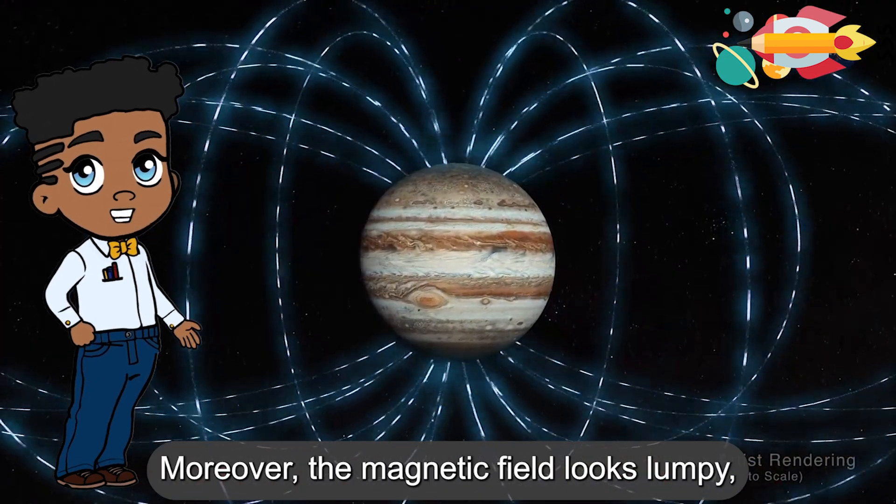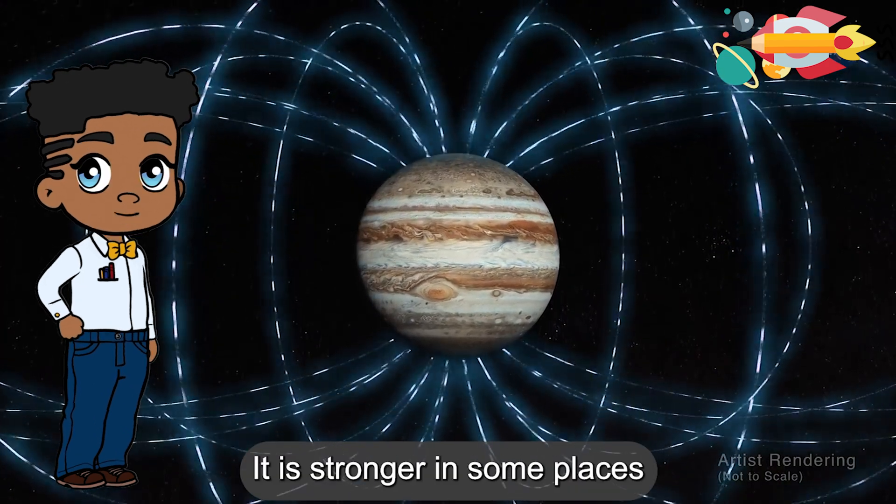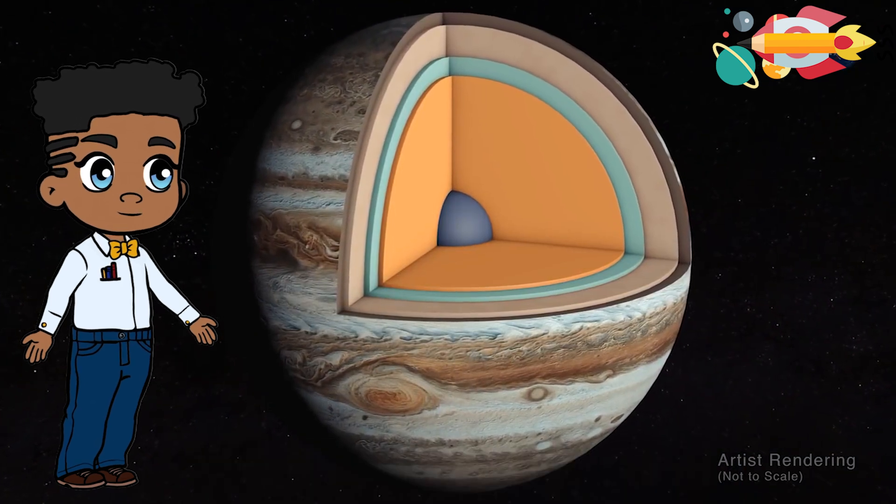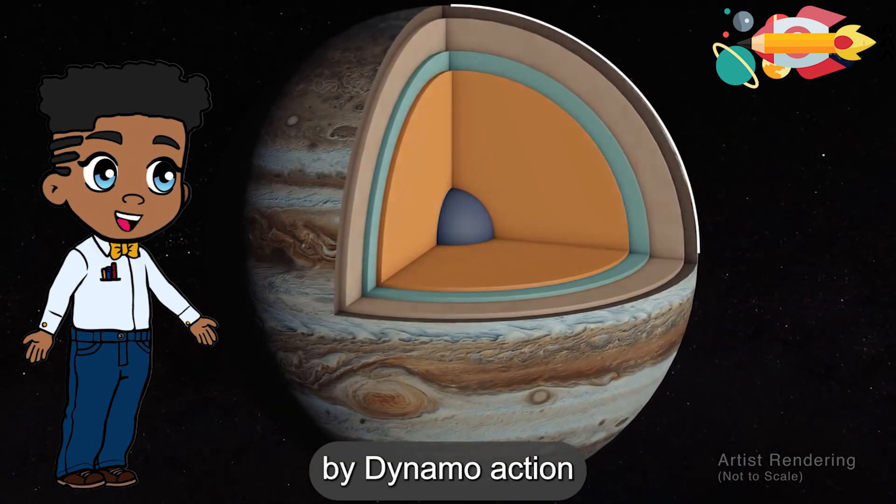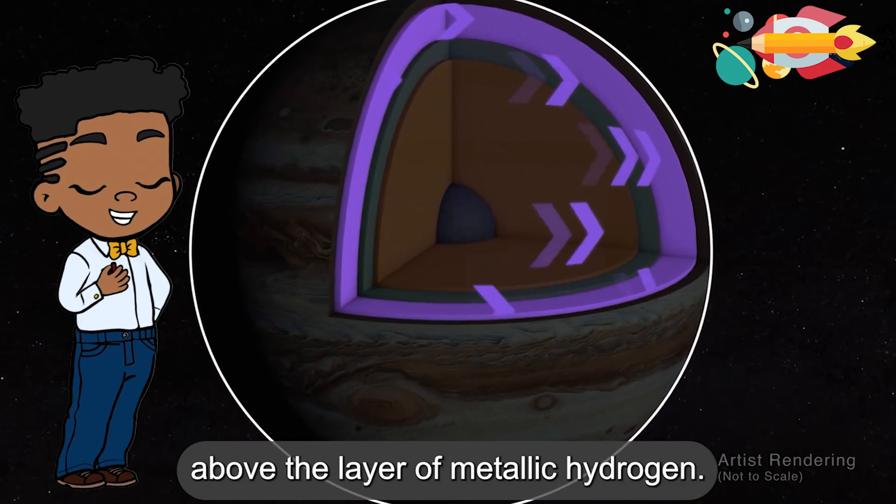Moreover, the magnetic field looks lumpy, he says. It is stronger in some places and weaker in others. This uneven distribution suggests that the field might be generated by dynamo action closer to the surface above the layer of metallic hydrogen.